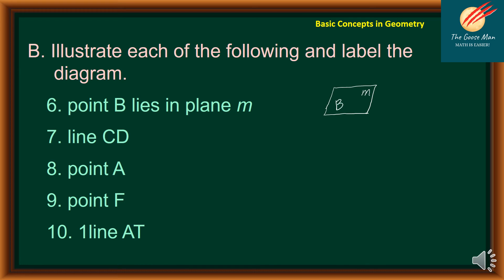Next, line CD. So if we will illustrate this, we have line CD. So this is in symbol. We can rewrite this one. Actually, this is the line segment or line, should I say. And we have CD. All right. Next, point A for number eight. So we can simply draw point A.